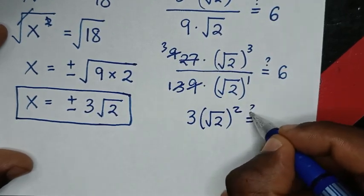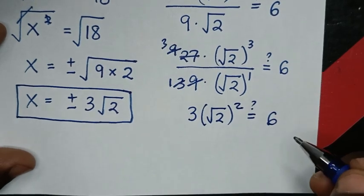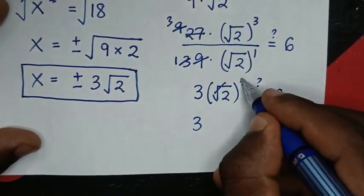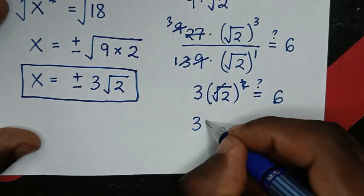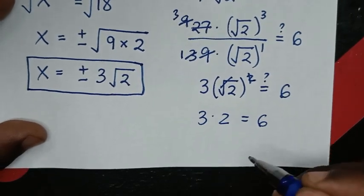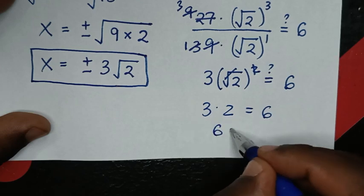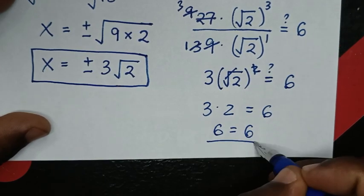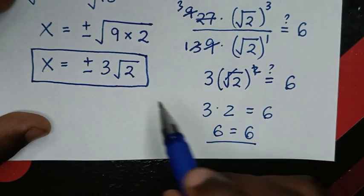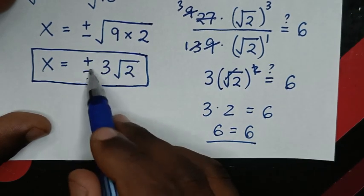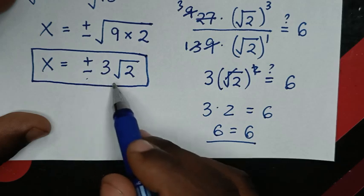Now, square root of 2 bracket to the power 2 counts as a square, so it will be 3 times 2, which is equal to 6. From 3 times 2 it is 6, it is equal to 6. So the left side equals the right side, confirming x equals 3 square root of 2 is correct.